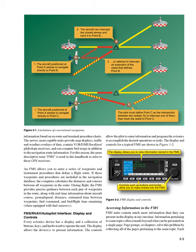The newer, more capable units provide map displays, traffic and weather overlays of data, contain VOR/DME/localizer/glide slope receivers, and can compute fuel usage in addition to the navigation route information. For this reason, the more descriptive term FMS is used in this handbook to refer to these GPS receivers.